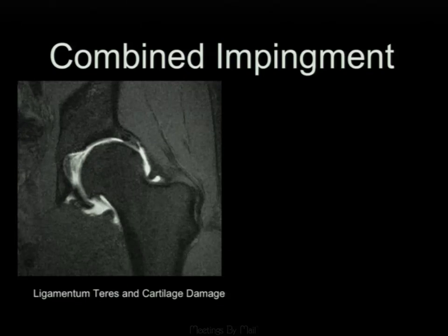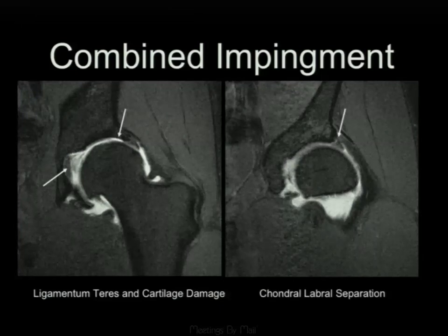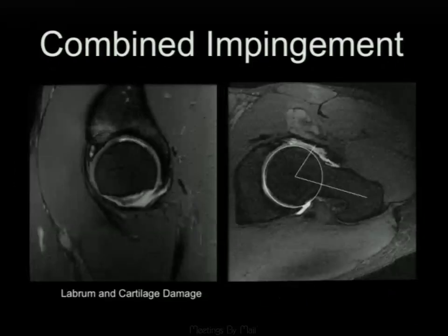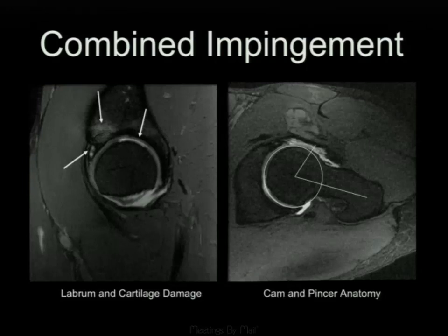In combined impingement, many findings occur together. We see damage to the ligamentum teres, loss of articular cartilage overlying the acetabulum, which is subtle but important prognostically. The surgeon needs to know whether microfracture will be performed at surgery, or whether the patient has progressed too far for FAI cheilectomy to be helpful. On the oblique axial view, we measure the alpha angle, which is clearly abnormal, and on the oblique sagittal view, labral damage anteriorly and marrow edema in the acetabulum due to cartilage damage.